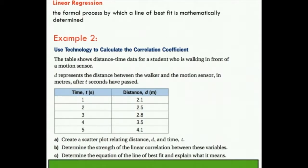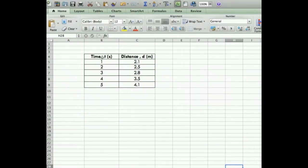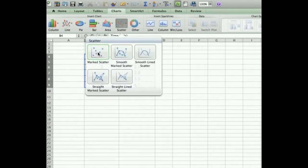In this example, a student is walking away from a motion sensor. d is the distance between the walker and the motion sensor, and t is the number of seconds that have passed. If you're following along with this video, you can open an Excel document and create this table. Once you've typed up your data, highlight that table, go up to charts, and create a marked scatter plot.